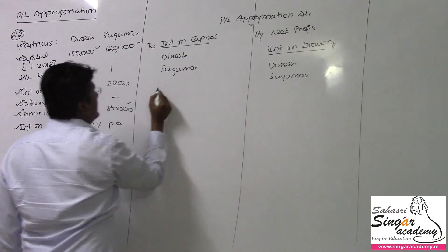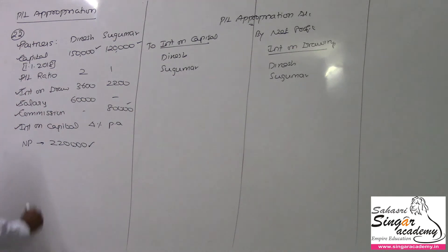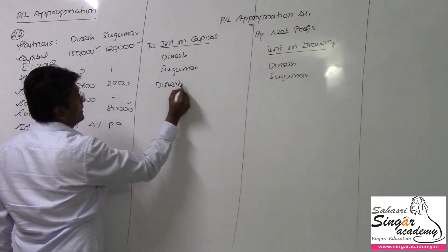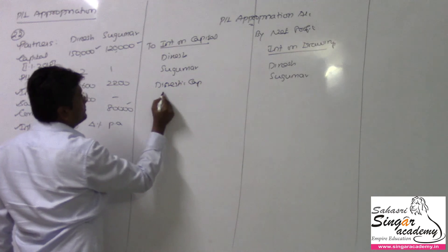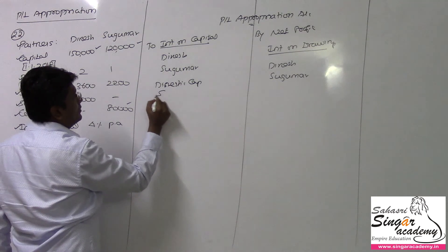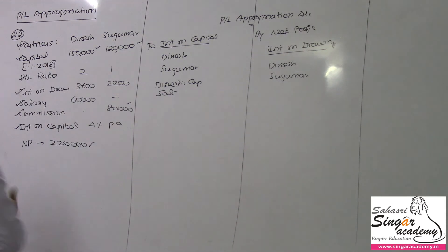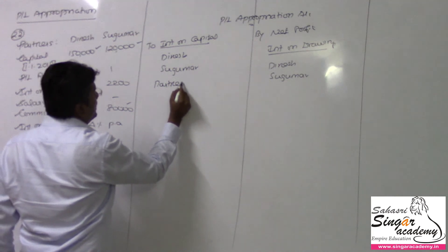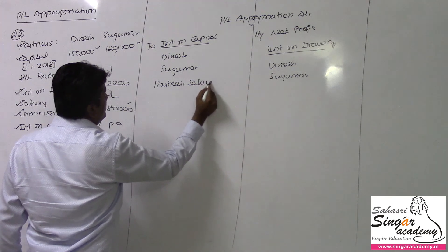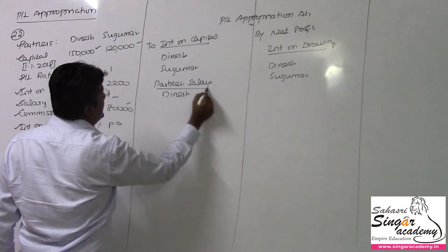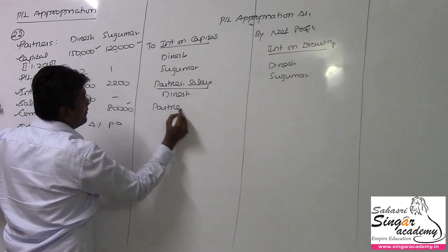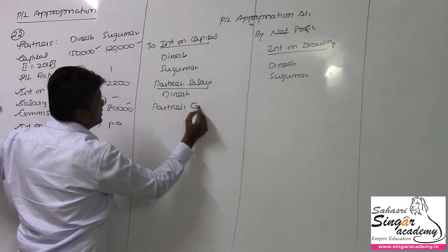Apart from that, salary is given only to Dinesh — so we post partner salary account for Dinesh only. Then, commission is given only to Sugumar — so we post partners' commission account for Sugumar alone.